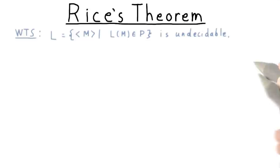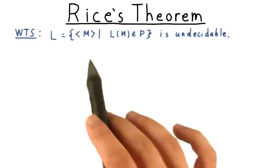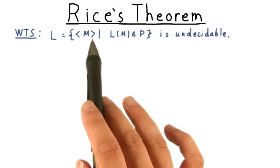So far, the pattern has been that we've wanted to show that some language L was undecidable, and this language L was about descriptions of Turing machines whose languages, that is the set of strings that they accept, have a certain property.